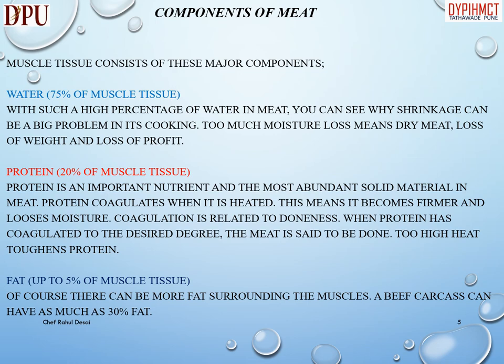Components of meat: muscle tissue consists of these major components. Water makes up 75% of muscle tissue. With such a high percentage of water in meat, you can see why shrinkage can be a big problem in its cooking. Too much moisture loss means dry meat, loss of weight and loss of profit.